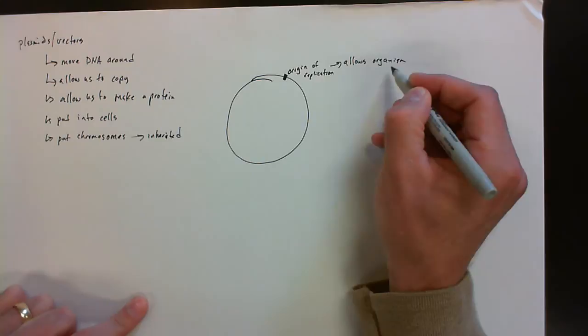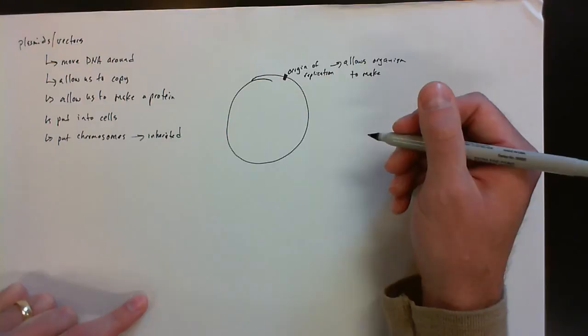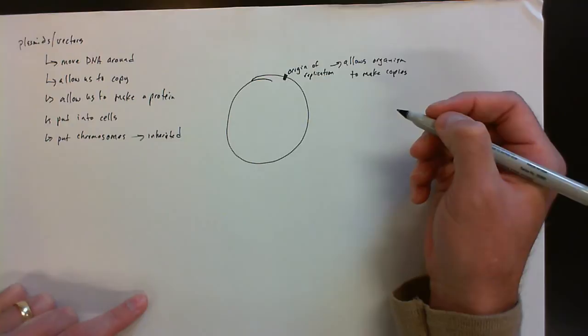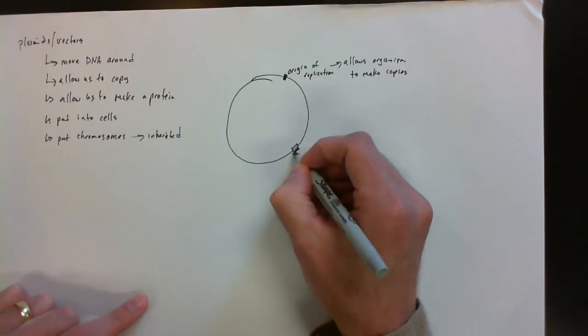So if I want to make more of that particular piece of DNA I'm interested in, I can put it into the plasmid, put it into bacteria, and then it will make copies of it.